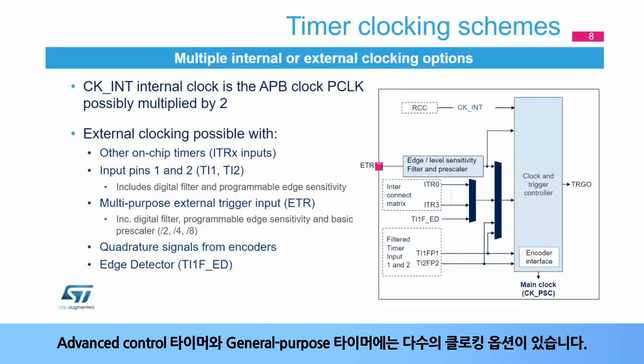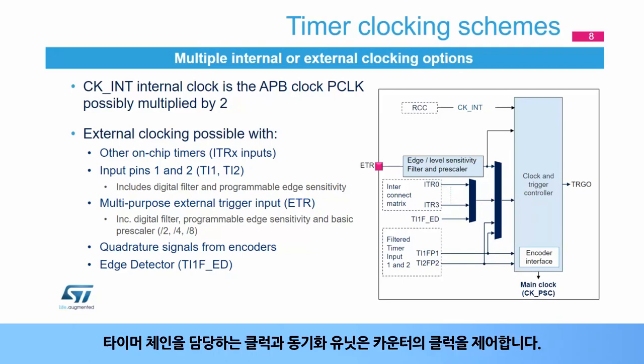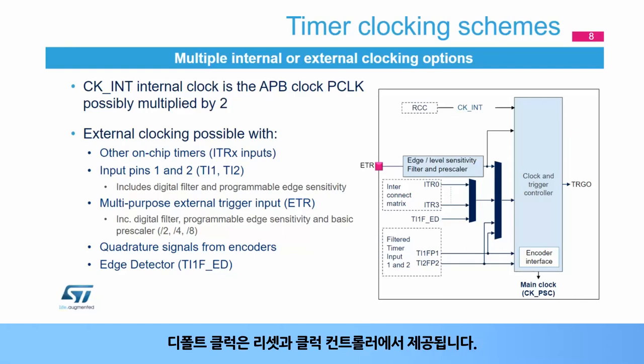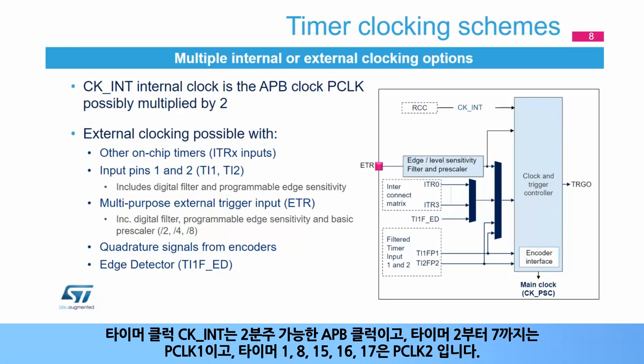Advanced control timers and general purpose timers feature multiple clocking options. The clock and synchronization unit, also responsible for timer chaining, handles the clock for the counter. The default clock comes from the reset and clock controller. This timer clock, CKINT, is the APB clock, possibly divided by 2: PCLK1 for timers 2 to 7, and PCLK2 for timers 1, 8, 15, 16, and 17.